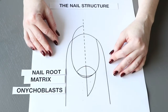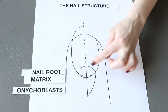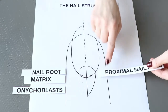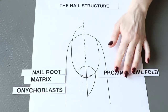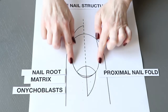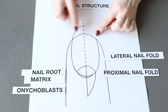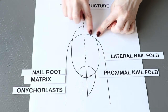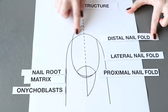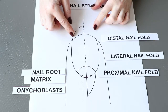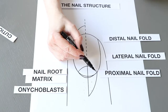The nail plate is surrounded by nail folds, which have the function of protecting the nail plate. The first nail fold is located in the same area as the nail root and is called the proximal nail fold. Then we have two side folds called lateral nail folds or side folds. We also have one more nail fold located underneath the nail plate, called the distal nail fold. The nail folds act as a protective barrier, and a part of the nail root is located under the proximal nail fold.